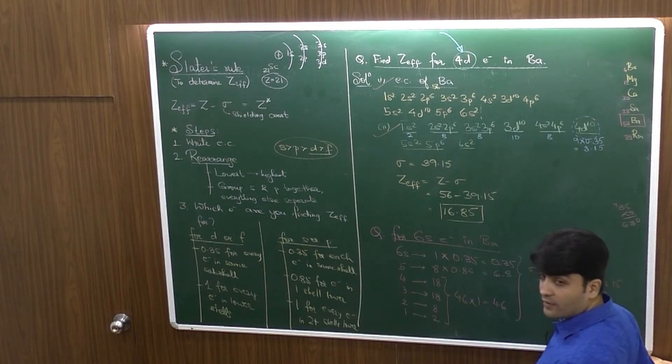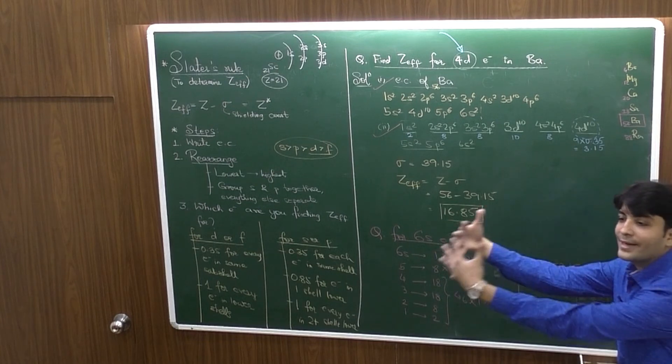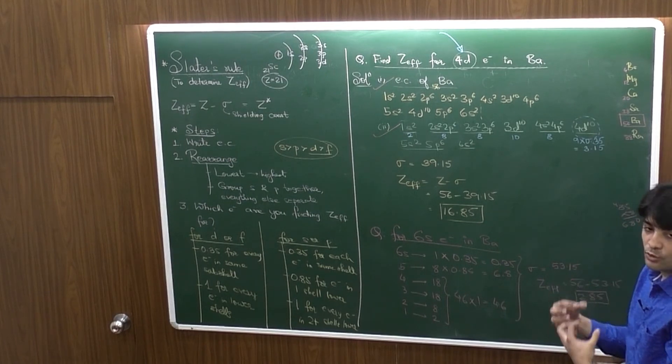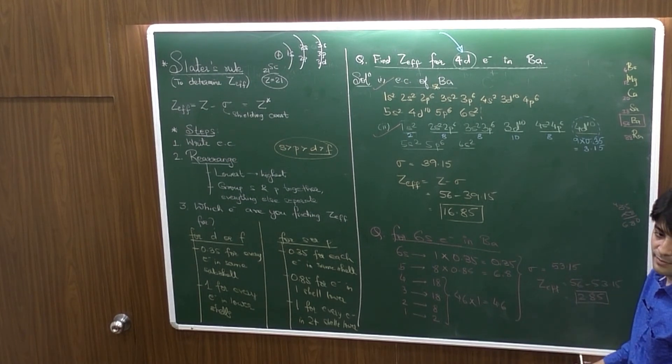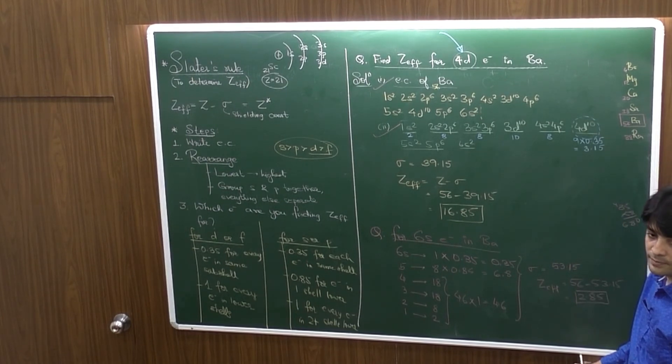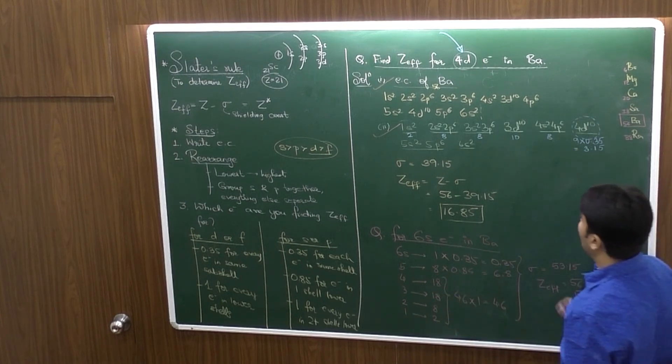Now, the concept. 6S is a very loosely held electron. Why it is loosely held? Because it is not attracted to 56 protons. It is just attracted by 3 protons effectively. That is why the electron removal is very easy in case of 6S electron for barium. Clear? Understood how to apply Slater's rule? You have to keep those two rules in mind. And last part.